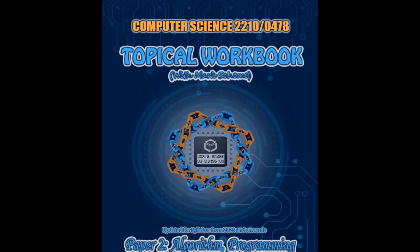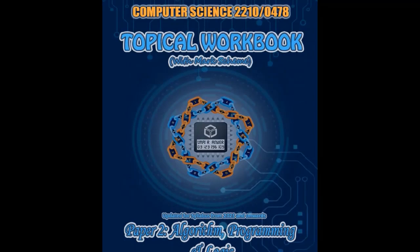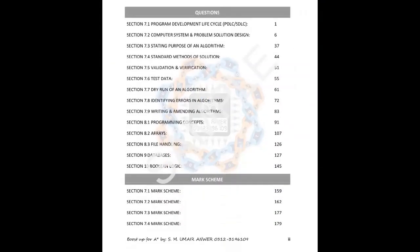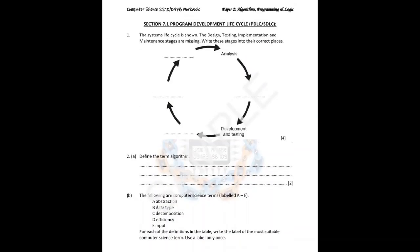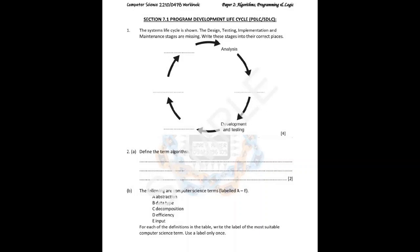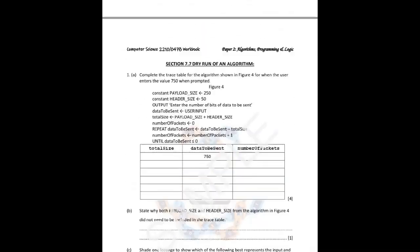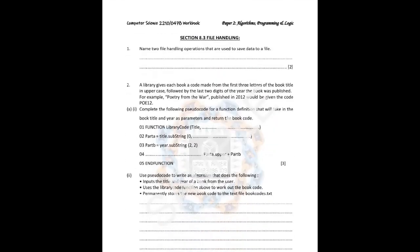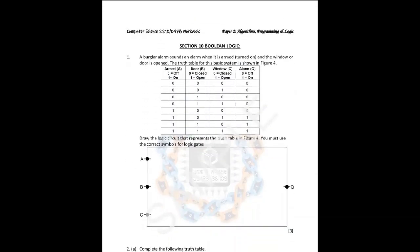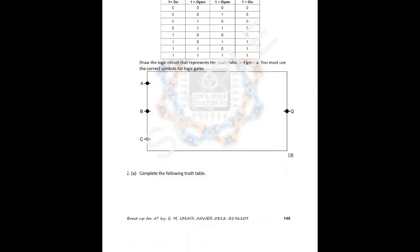Similar to the Paper One workbook, I have designed a workbook for Paper Two as well, covering algorithms, programming, and logic for CAIE 2210 or 0478, GCE or IGCSE Computer Science. It contains questions on every subsection of the syllabus for Paper Two, along with the mark scheme. Sections covered include 7.1, 7.7, 8.3, and Section 10 Boolean logic. A must-buy if you want a very good score in your Cambridge examination.